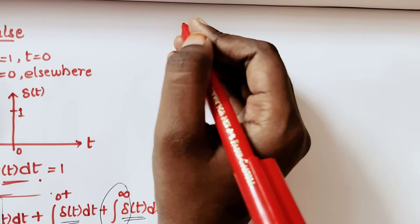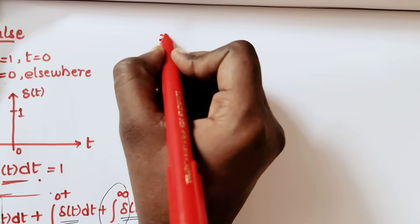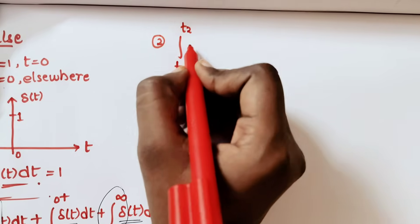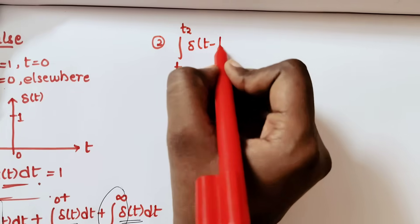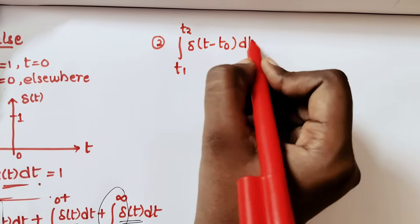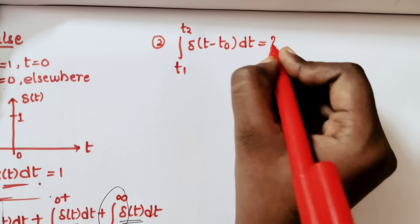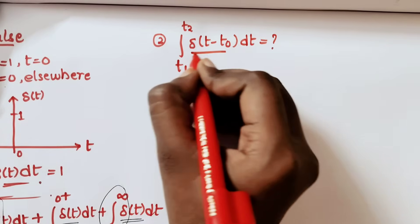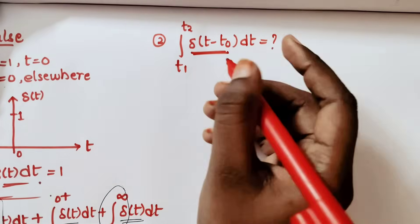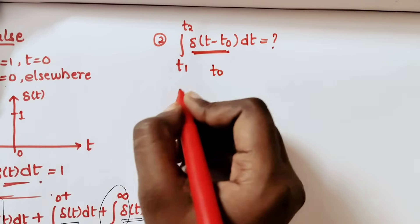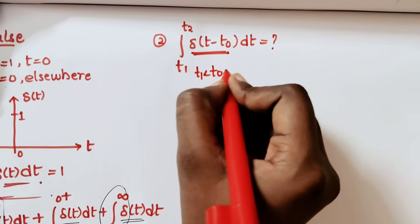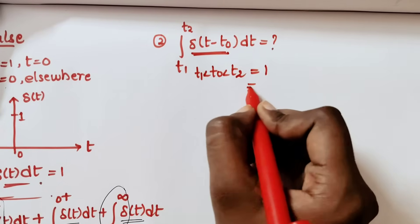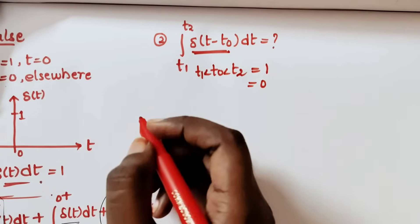What if we take the integral from t1 to t2 of δ(t minus t0) dt? What will its value be? This is the delayed version of the impulse signal. If t0 lies in between t1 and t2, the value of this integral is 1; otherwise it is 0. This is the second property.